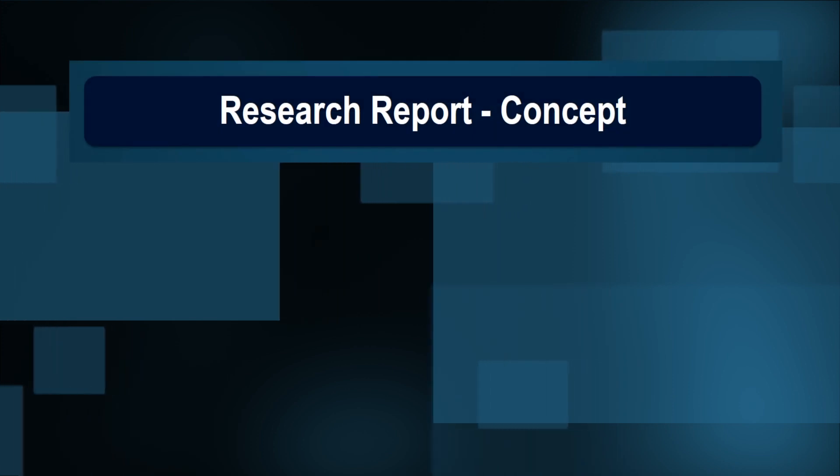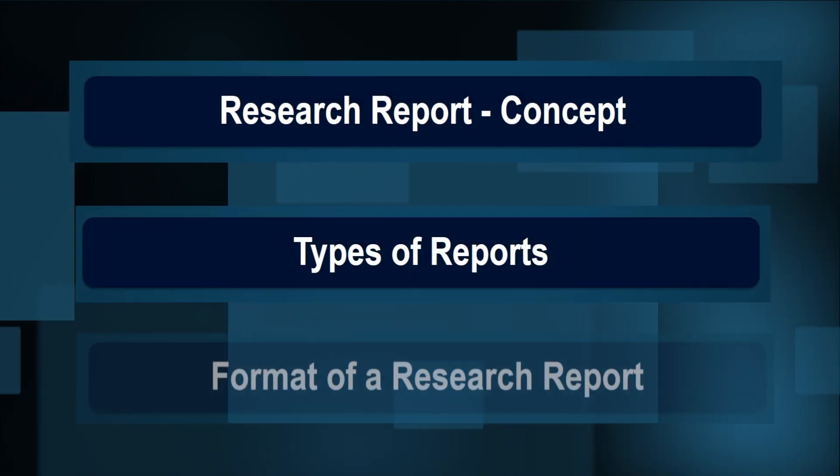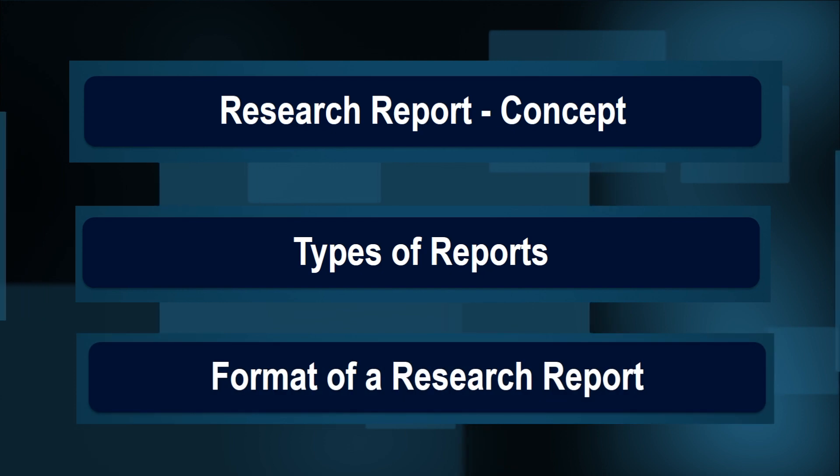So, dear learners, in this video we have understood the concept of research report, its various types, and the format of a research report, which may have three sections: the preliminary material, the body of the report, and the reference material. Thank you very much.